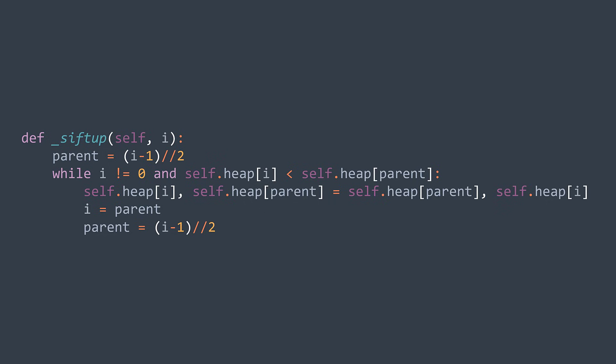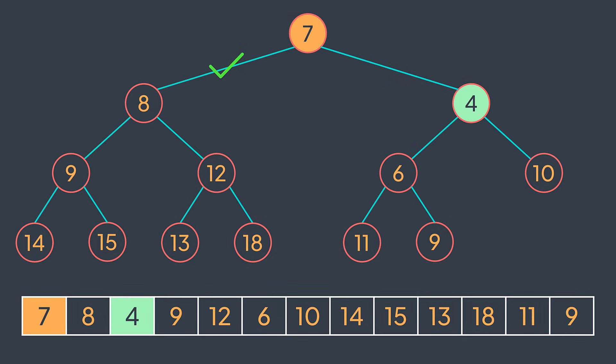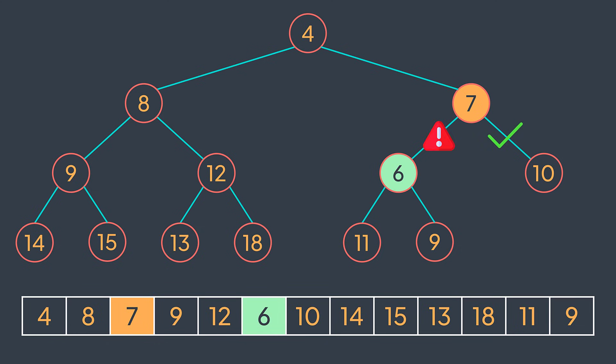For sift down, we keep swapping the node while it has a smaller child. If both children are smaller, we swap with the smallest one. For example, if we want to sift down seven in this heap, its right child is smaller so we swap. Now its left child is smaller so we swap. Now both children are not smaller so we stop — the heap property is respected again.